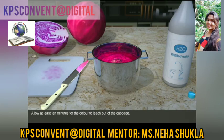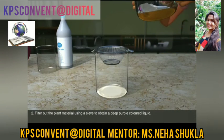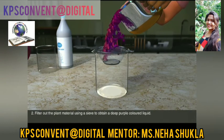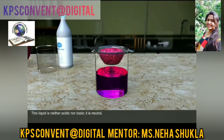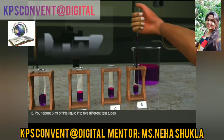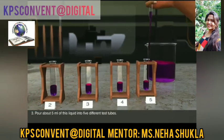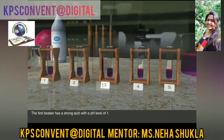Filter out the plant material using a sieve to obtain a deep purple colored liquid. This liquid is neither acidic nor basic — it is neutral. Pour about 5 mL of this liquid into five different test tubes.